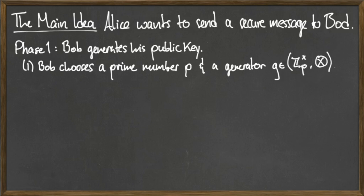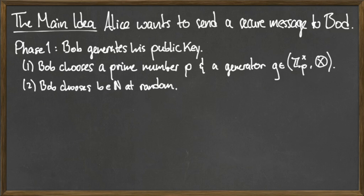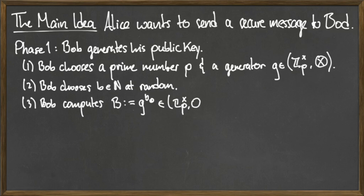Bob first chooses a prime number p and a generator g in the multiplicative group Z mod p. Next, Bob chooses a natural number little b at random, and uses this natural number to compute capital B, which is equal to g to the b. Since g is a generator of the multiplicative group Z mod p, capital B = g^b is also an element of the multiplicative group Z mod p.